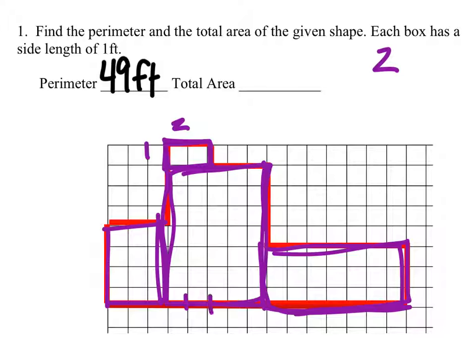This rectangle here, one, two, three, four, five, by one, two, three, four, five, six, seven. So, a five by seven rectangle would give us an area of thirty-five square feet.